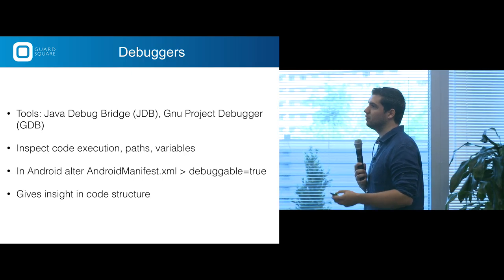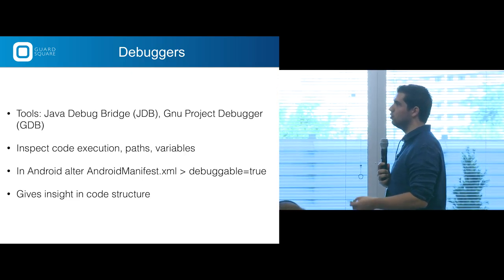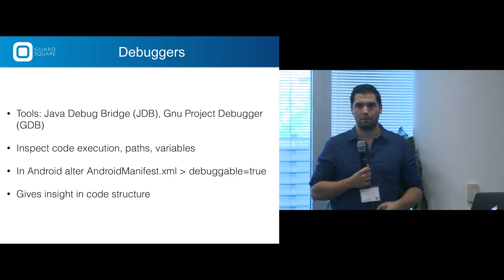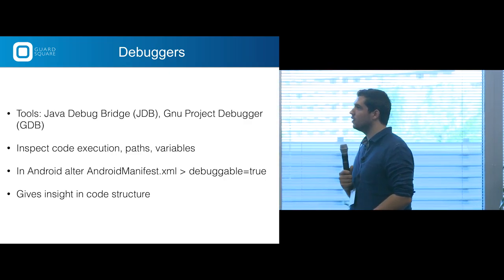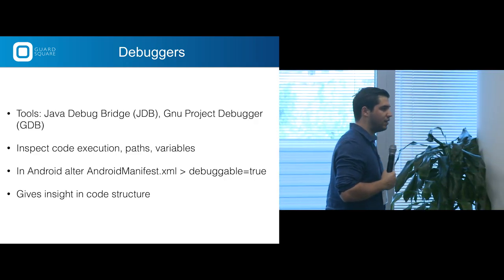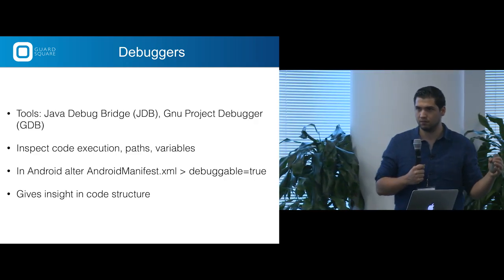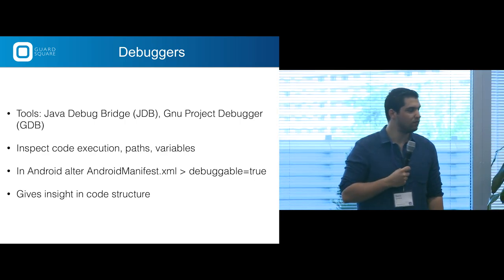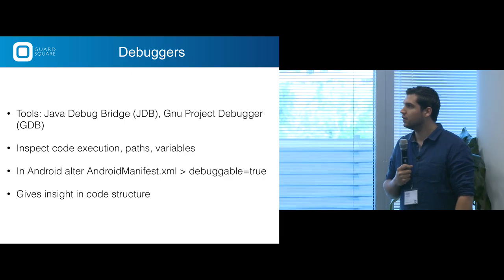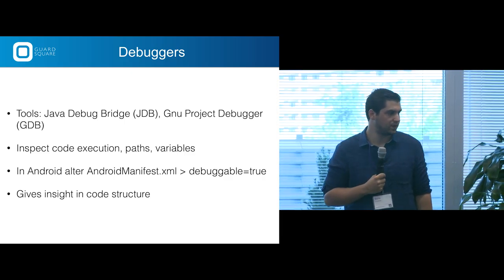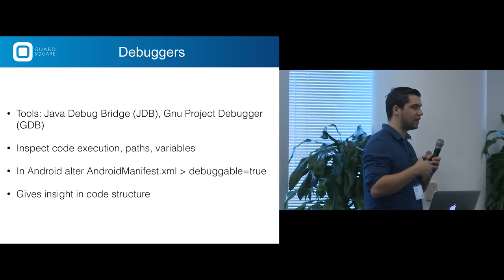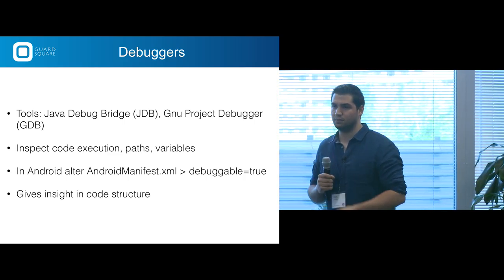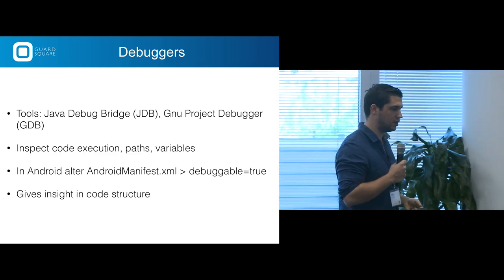Debuggers: the standard ones are the Java Debug Bridge and the GNU Debugger. They let you inspect code executions, code paths, and variables. In Android, if you want to debug an application it's enough to decode your Android manifest, turn debuggable to true, and just run it in a debugger — tools like APKtool can do that for you. This gives insight into the code structure and lets you step through the code, seeing the application executing and changes happening in real time.